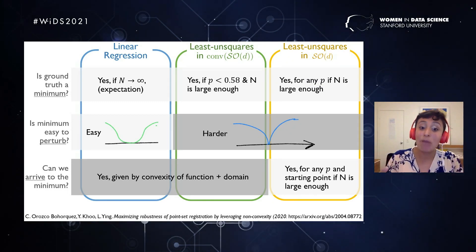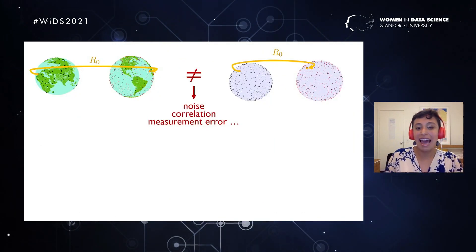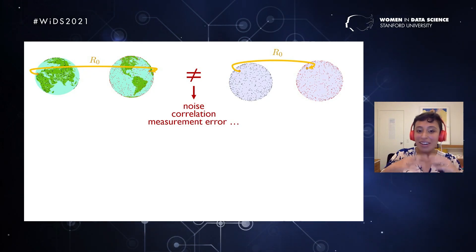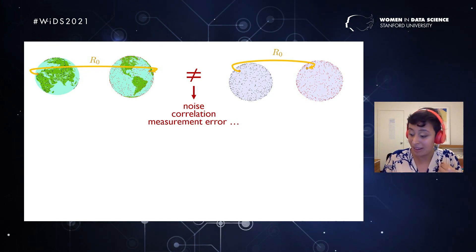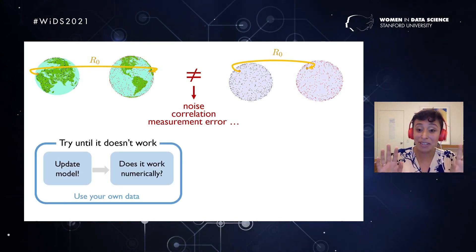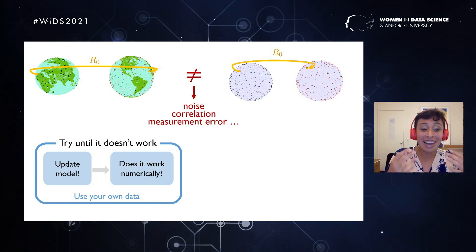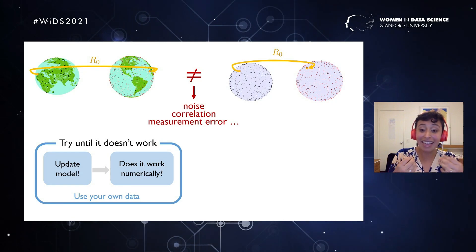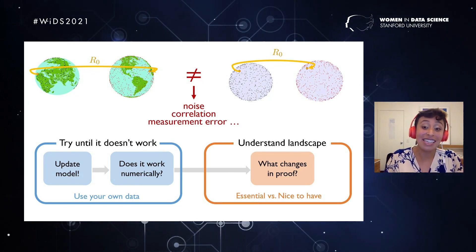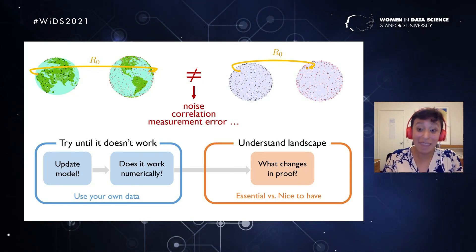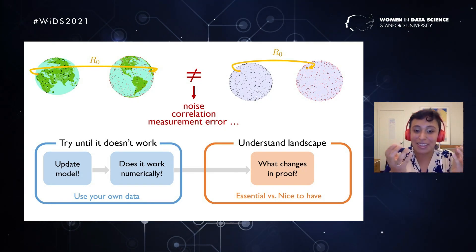So at this point you may ask, okay, you started with a very random model. How does that work with my data? My data usually has a different set of noise. It can have correlation and it can have measurement errors. So how can I translate those theoretical results into my own problem? So there we go back to the approach of trying things and then looking at the theory. So first, try things, update the model, and create a probabilistic model with artificial data from your own data. And ask yourself, does it work numerically? And then if it does, look at what changes in the proof and see if you can extend things and find those essential things that change the proof, and if those things change in your data or not.